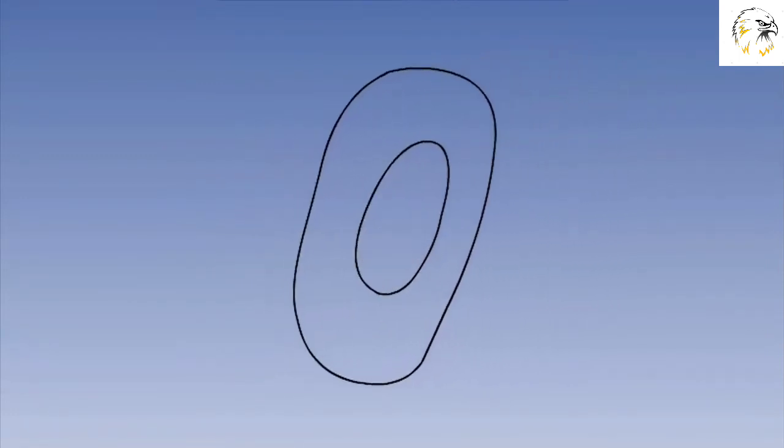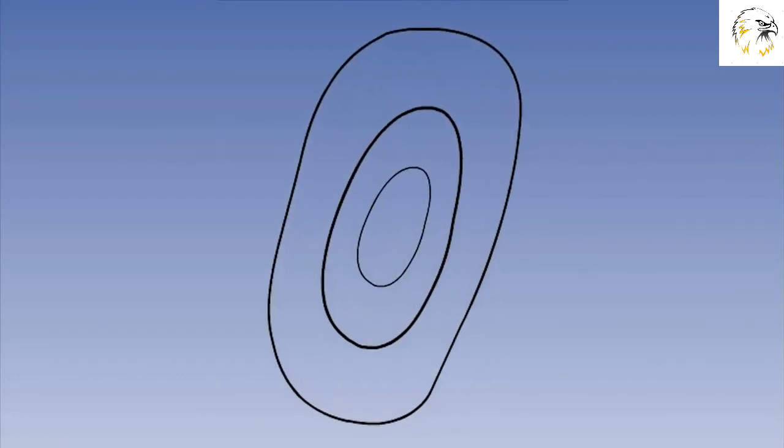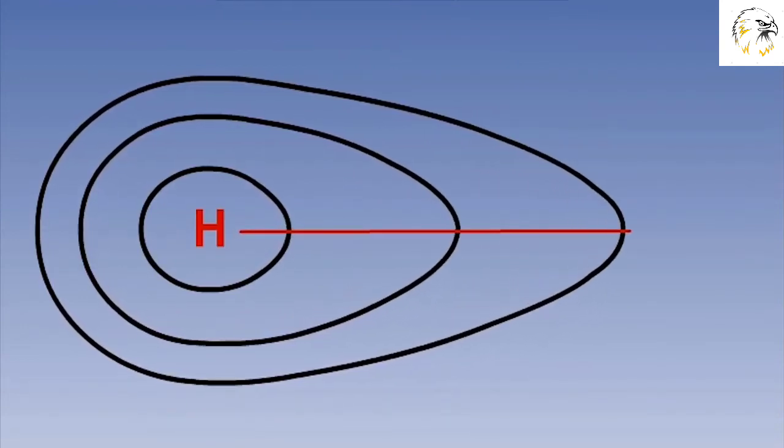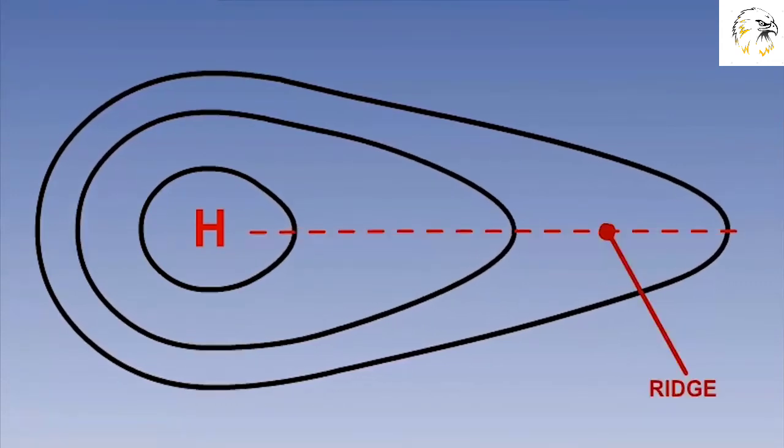By watching the isobars, we can see over time how high pressures can change. New concentric higher value isobars developing in the centre of the high indicate the high pressure is intensifying. If the isobars around the high were moving outwards, we could see the high pressure is growing. If we see the isobars protruding outwards from the high pressure into an area between two lows, we call this a ridge. It signifies an extension of the high pressure into another area, spreading its influence.